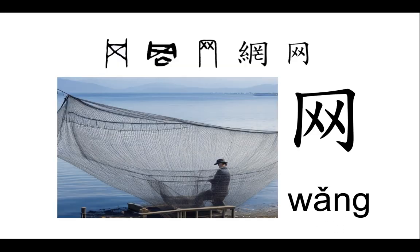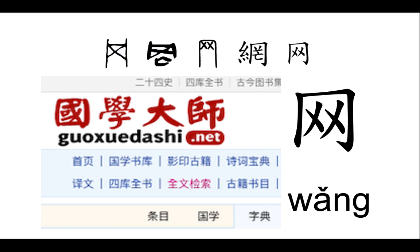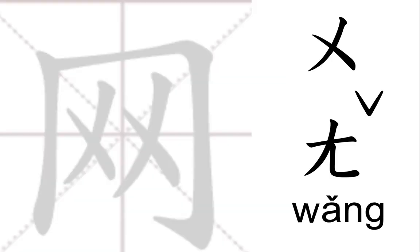The simplified character Wǎng goes back to basics, dropping the pronunciation and material clues of Wǎng and Mì, and leaving just the net frame and the two X's in the middle. Let's practice writing the strokes of the simplified form Wǎng.